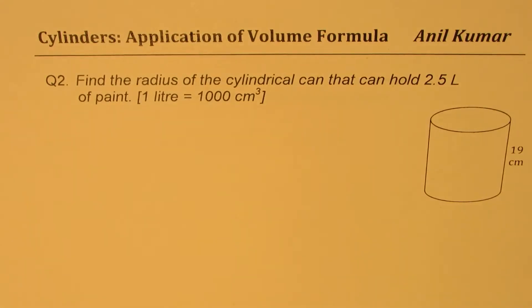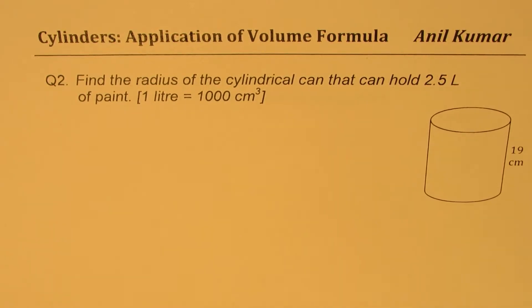Question number two: find the radius of the cylindrical can that can hold 2.5 liters of paint. One liter is 1,000 centimeter cubes. The height of this cylinder is 19 centimeters.